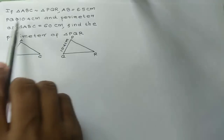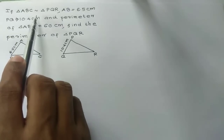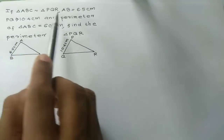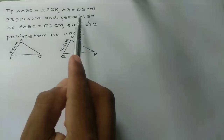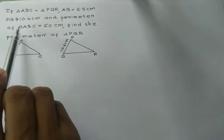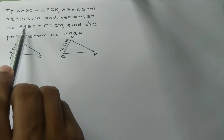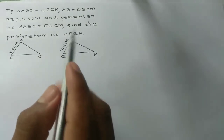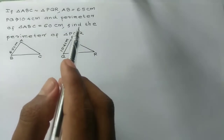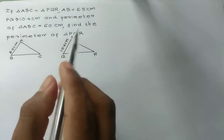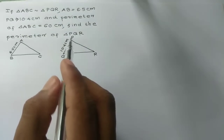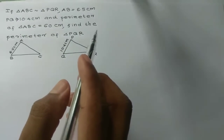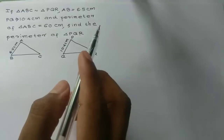If triangle ABC is similar to triangle PQR, AB equal to 6.5 cm, PQ equal to 10.4 cm, and the perimeter of triangle ABC is equal to 60 cm, find the perimeter of triangle PQR.